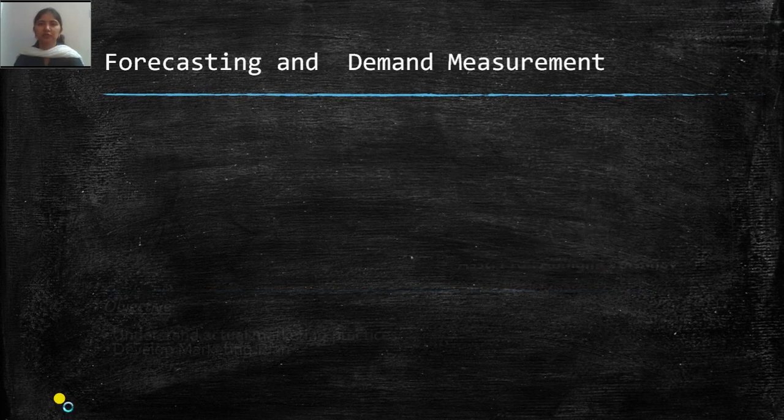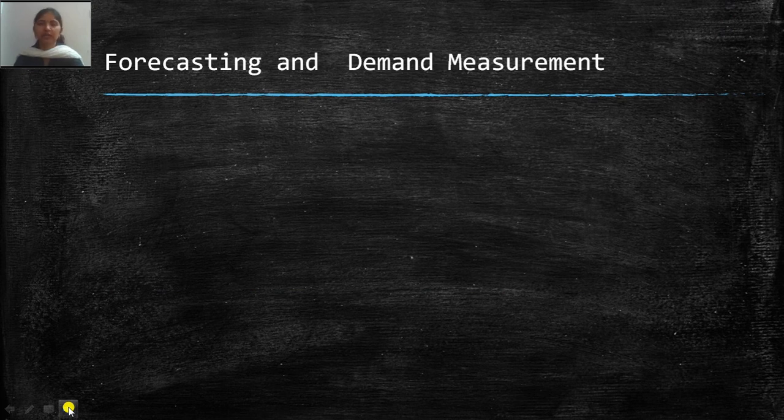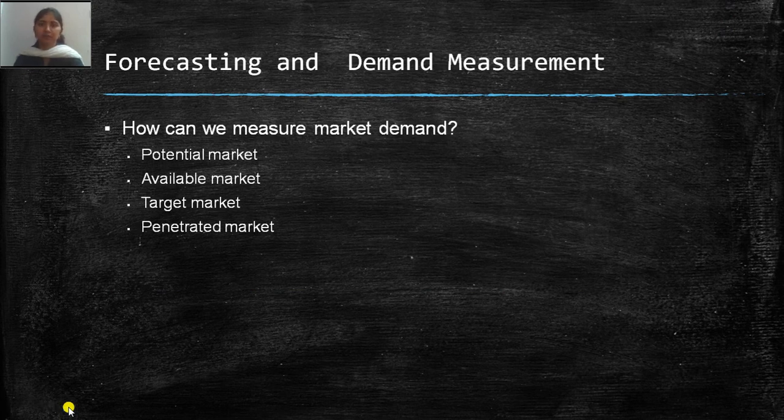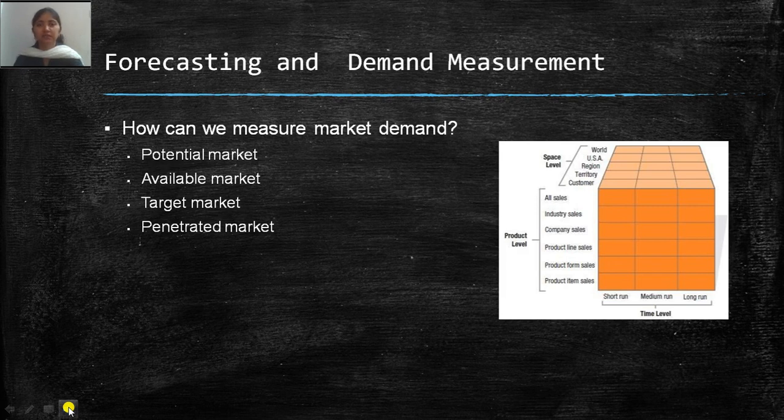It's very important for any marketer to forecast current and future levels of demand and measure them to be clear about available resources and measurement scales. At the space level, product level, and time level, there are 90 scales the marketer can use.